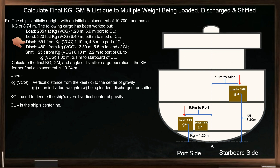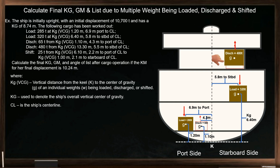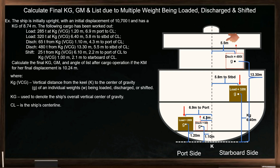Next, discharge 65 tons of cargo from the lower hold at kg 1.10 meters, and 4.3 meters port of the centerline. Another discharged weight: 480 tons from the main deck at kg 13.30 meters, and 5.5 meters to starboard of the centerline.